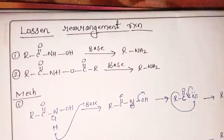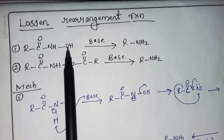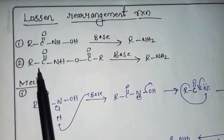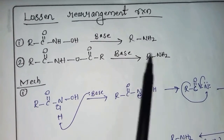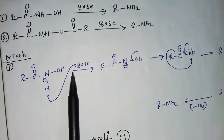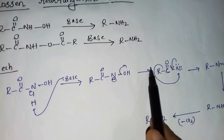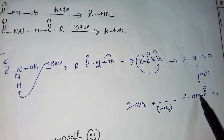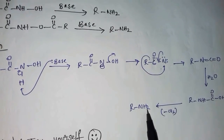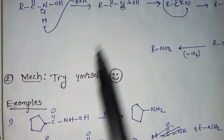Now for the Lossen rearrangement reaction. Two cases: first, hydroxamic acid (hydroxy amide) with base gives primary amine; second, hydroxamic ester with base gives primary amine. For the first case, the base abstracts the proton from OH, the OH leaves, and we get acyl nitrene — the intermediate. Then isocyanate forms, water reacts the same way as in Hofmann and Curtius, CO2 is removed, and we get the primary amine. For mechanism of the second case, try it yourself.